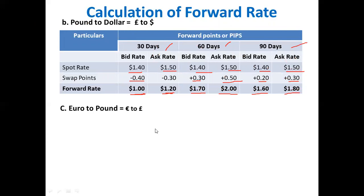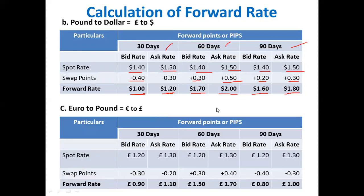We will calculate the forward rates for euro to fund. The spot rate is 1.20 bar 1.30, the same for all periods. For 30 days, the forward points are 30 bar 20 — a decreasing trend, so we deduct. 1.20 minus 0.30 equals 0.90. 1.30 minus 0.20 equals 1.10. For 60 days, the forward points are 30 bar 40 — an increasing trend, so we add. 1.20 plus 0.30 equals 1.50. 1.30 plus 0.40 equals 1.70.